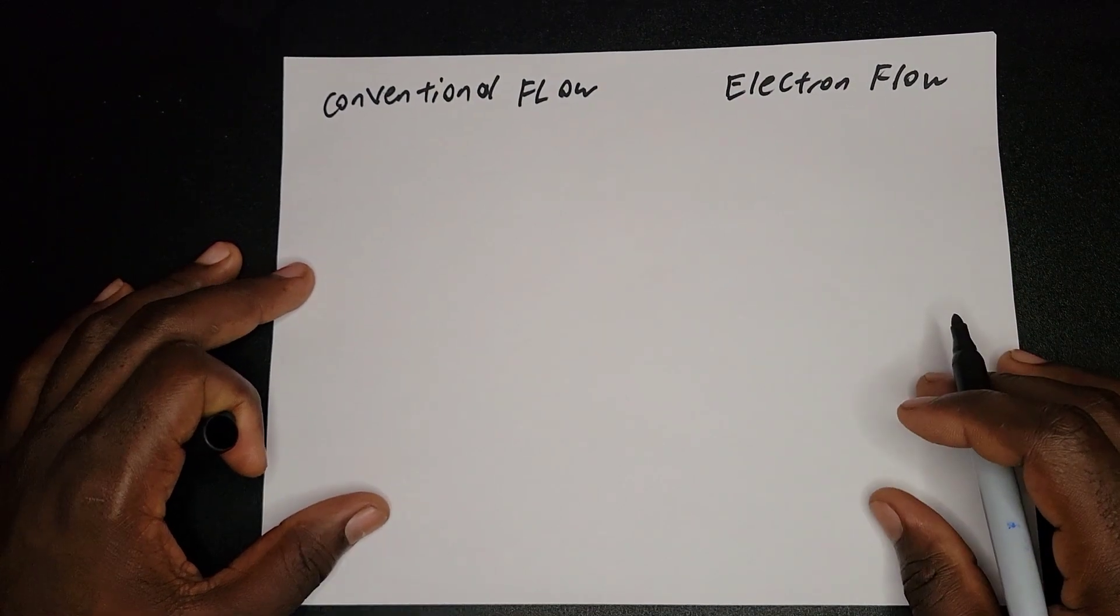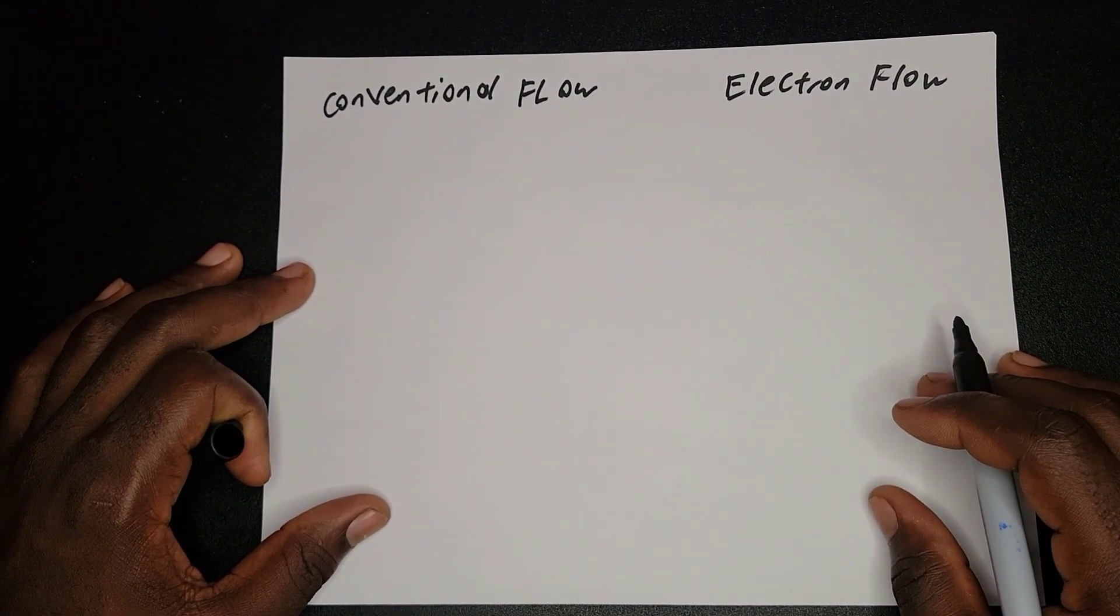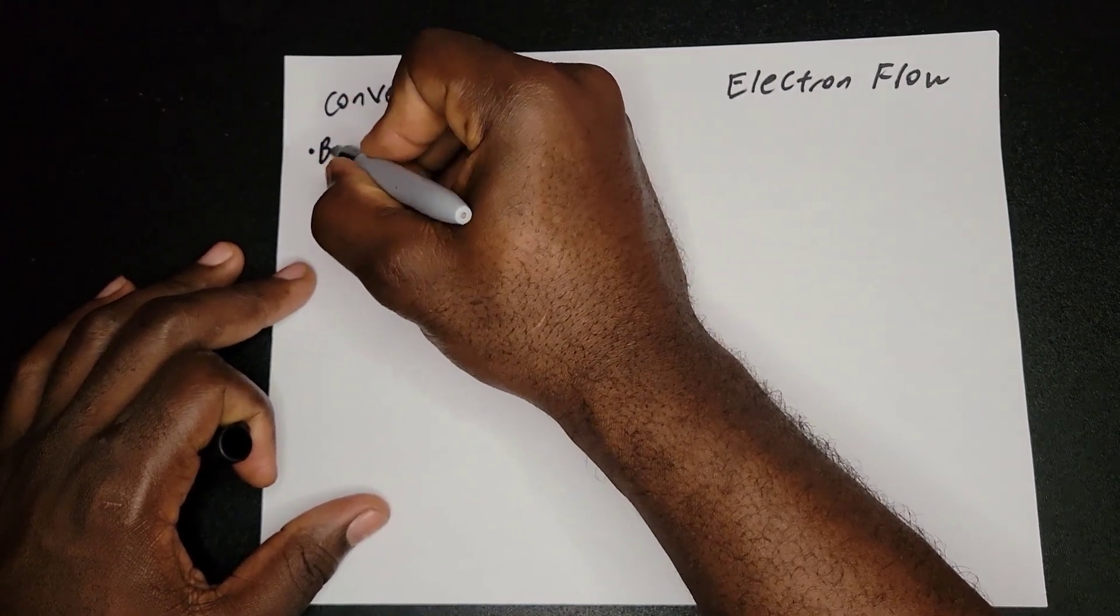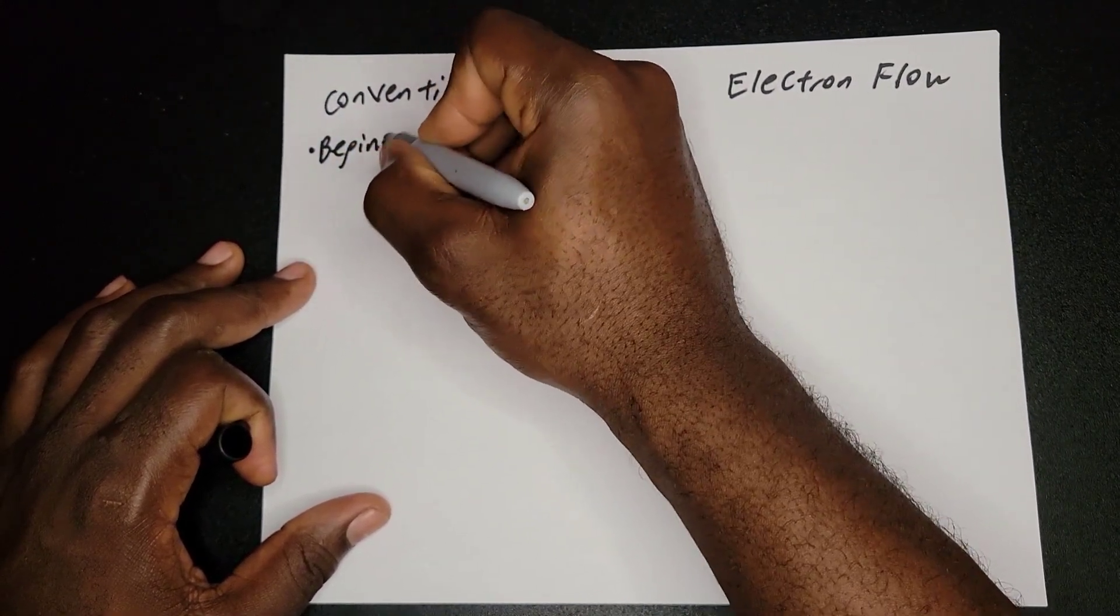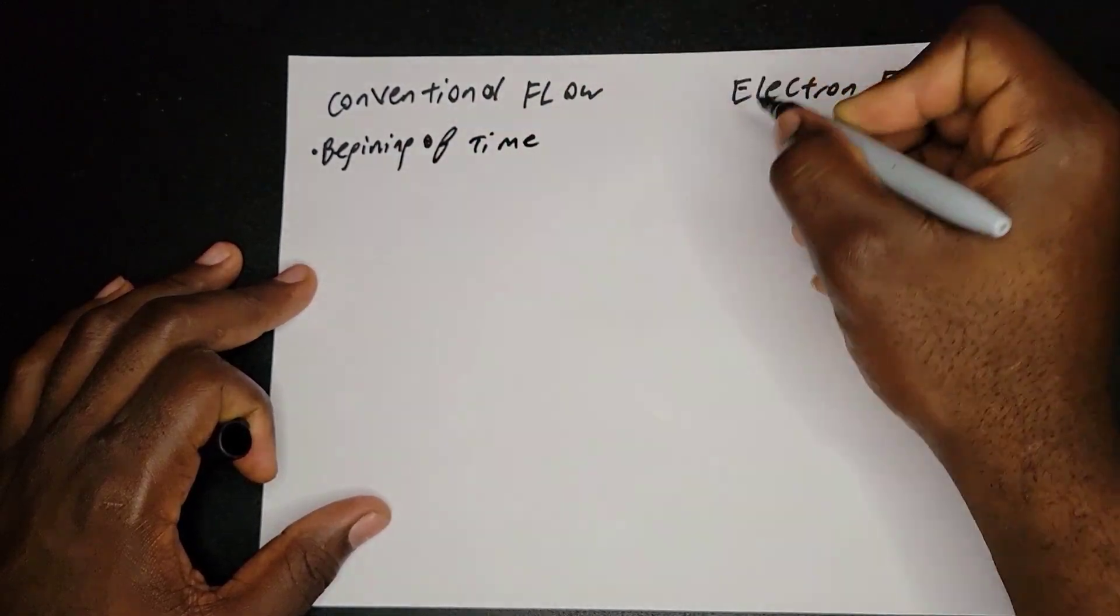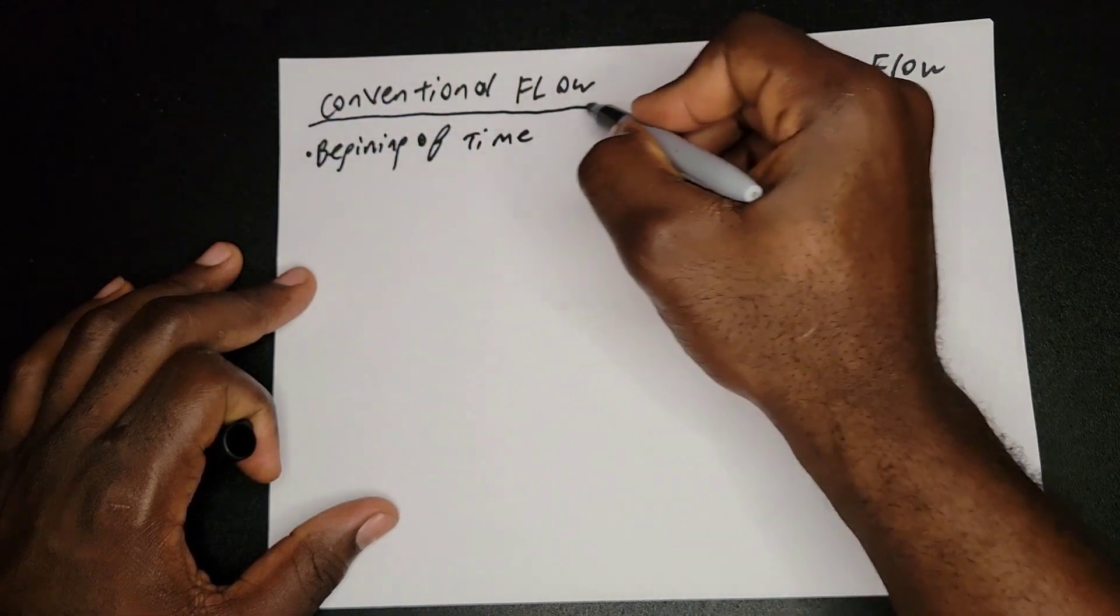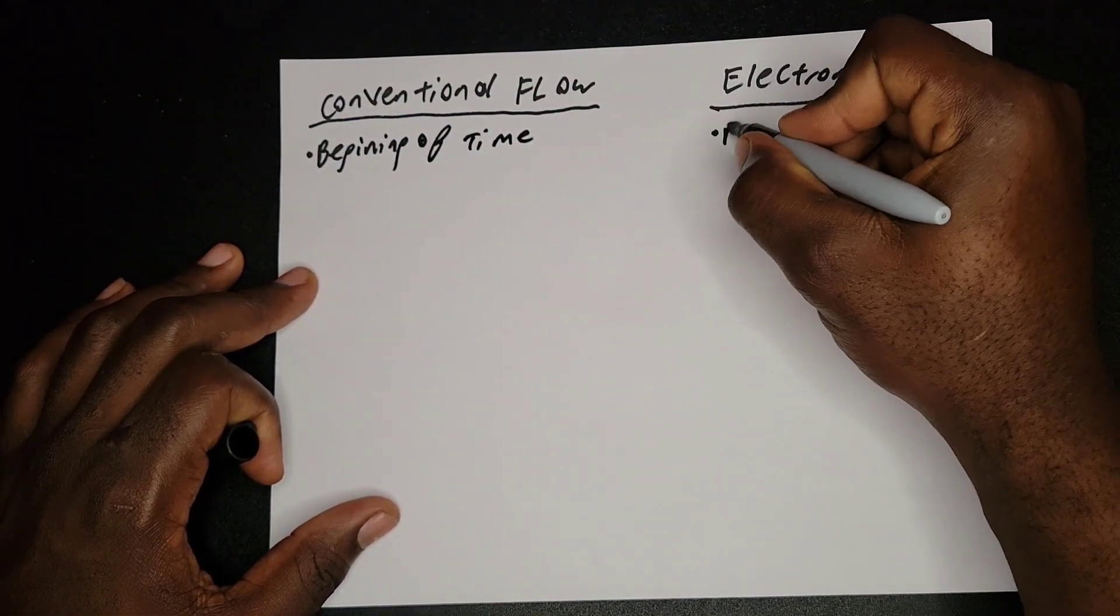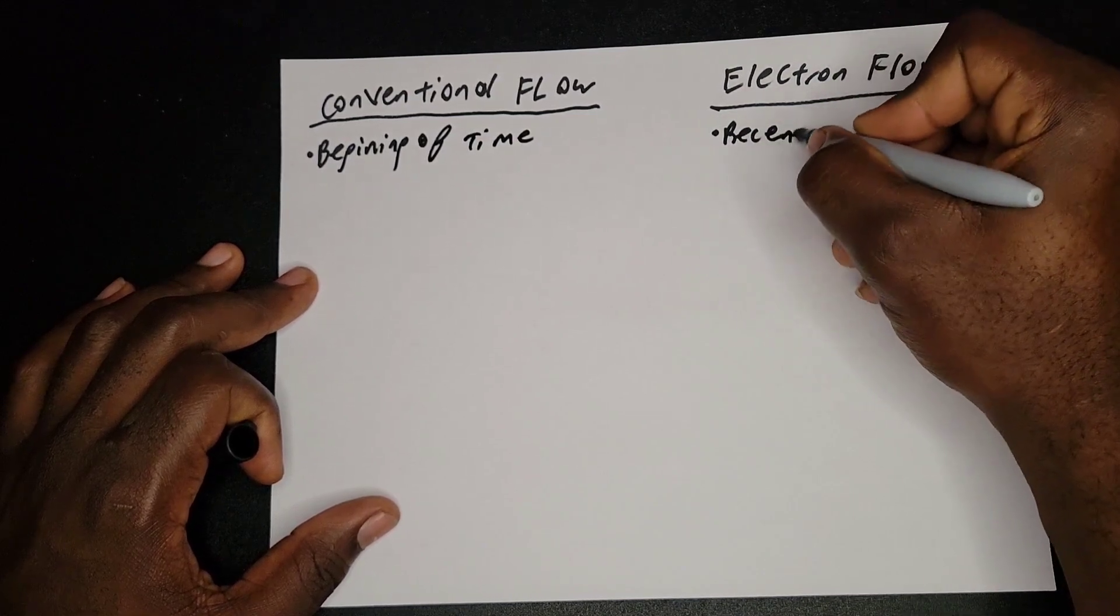So conventional is what we know from the beginning of time. This is from the beginning of time. However, electron flow is recent findings.